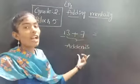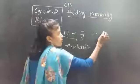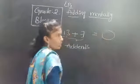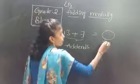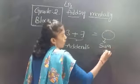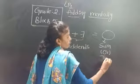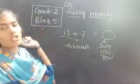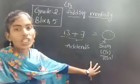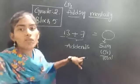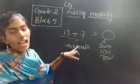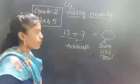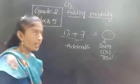So the numbers which we are adding are called addends, and the answer which we get after adding is called sum or total. Both names are there — two names are there — and with any name you can refer to it.